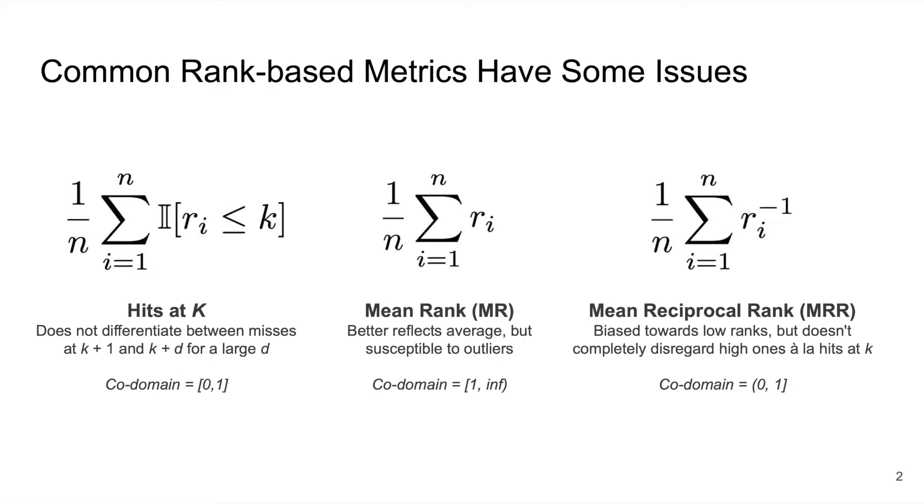However, hits at k doesn't differentiate between close misses and far misses. The mean rank is defined as the average rank, which better reflects the full distribution of ranks, but is biased towards larger ranks and susceptible to outliers.